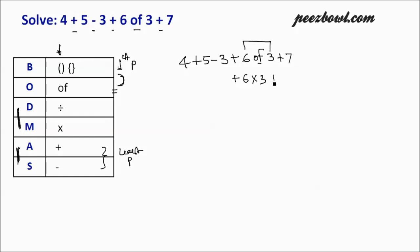We are going to keep all other numbers as they are. So we have 4 + 5 - 3, and 6 multiplied by 3 is 18, + 7.